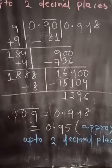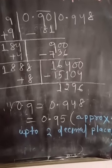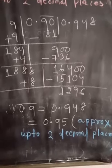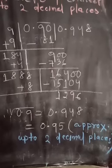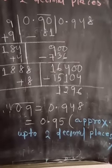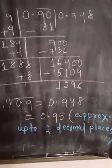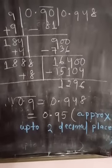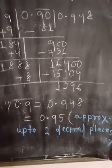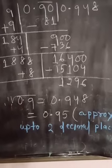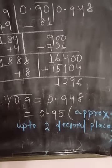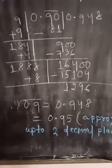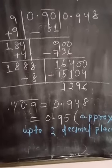To the right of 18, put the digit 4. Put 4 in the divisor and also in the question part. By putting 4, the number will be 184. Multiply 184 by 4, it will be 736.